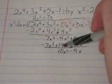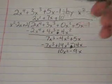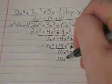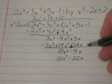Okay, next. 10x squared divided by x squared. That's going to leave you with 10. Multiply that back down. You get 10x squared minus 20x plus 20.